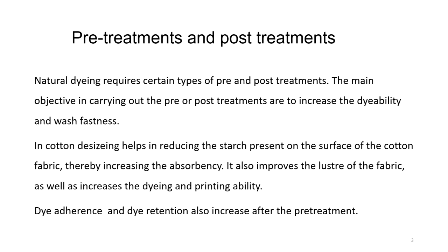Whether it is cotton, silk, jute, or wool — all need to be pre-treated in order to make the fabric ready for natural dyeing. Pre-treatments and post-treatments have their own significance. Natural dyeing requires certain types of pre- and post-treatments. The main objective in carrying out pre- or post-treatments is to increase the dyeability and wash fastness. In cotton, desizing helps in reducing the starch present on the surface of the fabric, thereby increasing absorbency. It also improves the luster of the fabric and increases dyeing and printing ability.